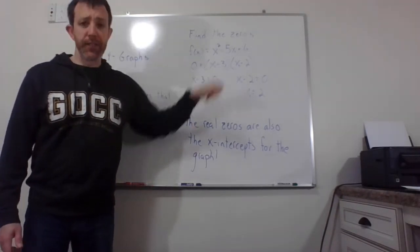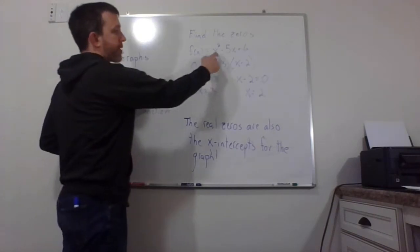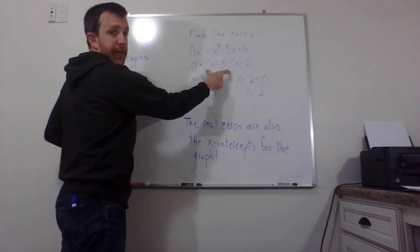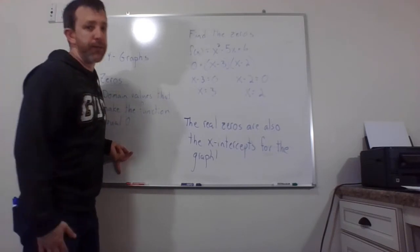And you'll notice I have it factored. Maybe you can read that. Maybe you can't. Hopefully you can. So I have x squared minus 5x plus 6. And then I factored it to be x minus 3 times x minus 2. Sorry, my marker was getting kind of bad.